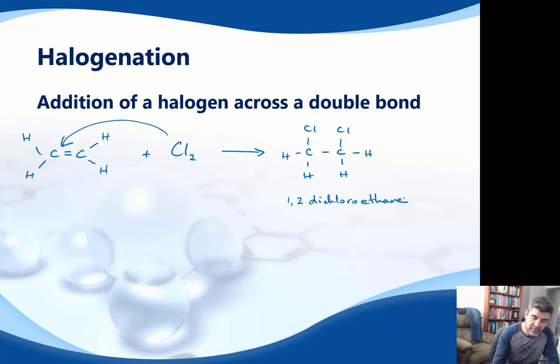Now, the same thing would happen if we added fluorine, or bromine, or iodine, all of which are diatomic molecules, and all of which will add across the double bond in order to produce a 1,2-dihaloethane.